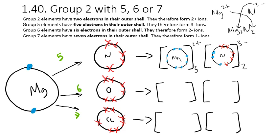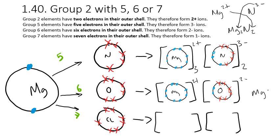Magnesium bonded with oxygen is a nice easy one: magnesium needs to lose 2, oxygen needs to gain 2, so it's 1 to 1. We get the same magnesium 2+ ion with 8 electrons in the outer shell, and then oxygen with 6 in the outer shell gains 2 electrons and forms an O2- ion — so we form MgO.